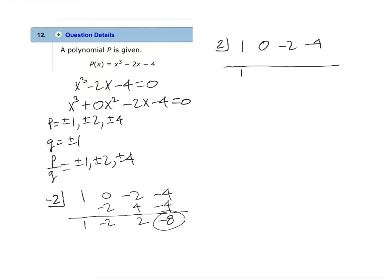Drop the leading coefficient under the line. So we will bring the 1 down. Now multiply 2 times 1 to get 2. Add and we have 2. Multiply 2 times 2 and we have 4.